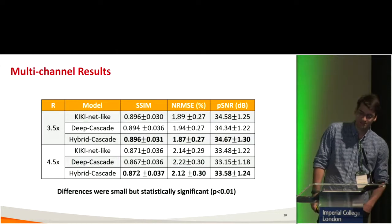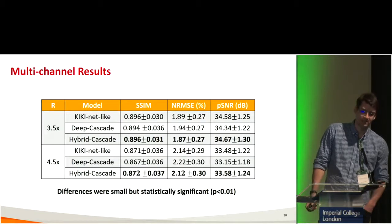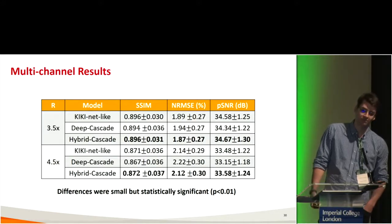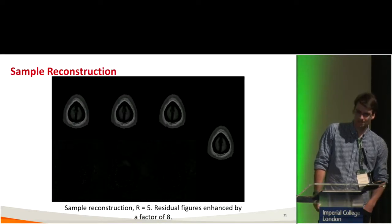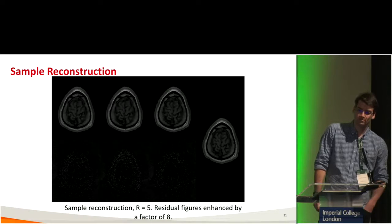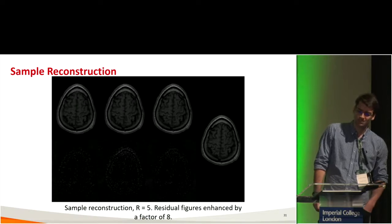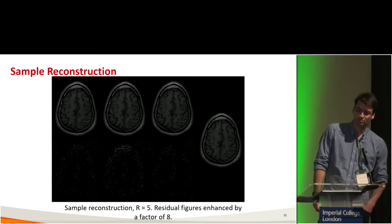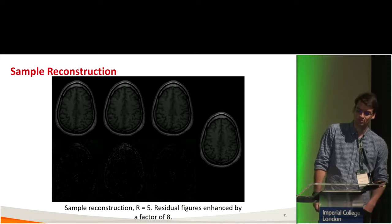These are the results for the multi-channel experiment. Again, hybrid cascade was better than the compared techniques. The differences were also small but statistically significant for NRMSE and peak SNR. The sample reconstruction shows that results are pretty similar to the fully-sampled reference.